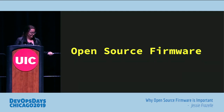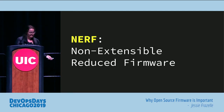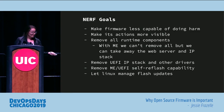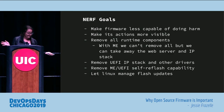So how do we fix these things? We do it with open source firmware — kind of the point of this talk and why it's important. When the open source firmware movement started, it was first called NERF — Non-Extensible Reduced Firmware. They ended up getting rid of the name, but it's still doing everything that entails. They're trying to make firmware less capable of doing harm, make its actions more visible, remove all the runtime components. With the management engine, you can't remove all of it, but you can take away the web server and the IP stack. You remove the UEFI IP stack, remove the ability to self-flash, and let Linux manage all the flash updates — because most people run Linux anyway, so that kernel should already be vetted.